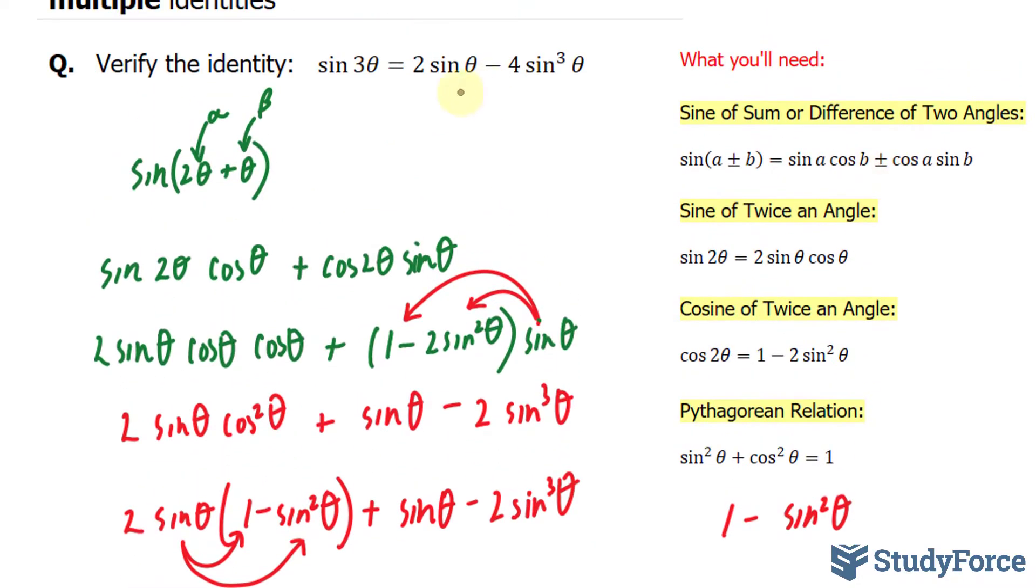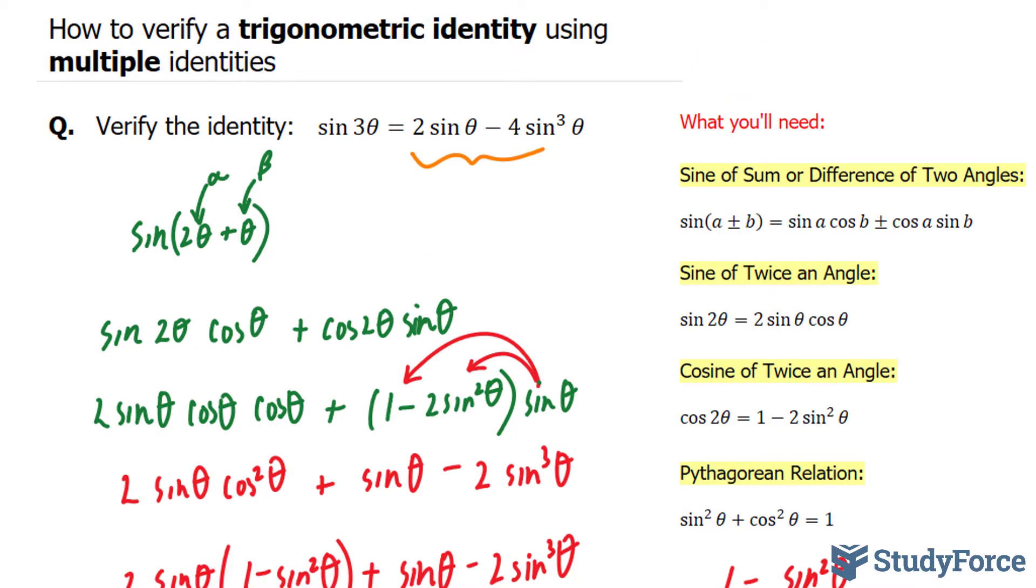This is exactly the right side of this equation. And there you have it. That is how to verify a trigonometric identity using multiple identities.